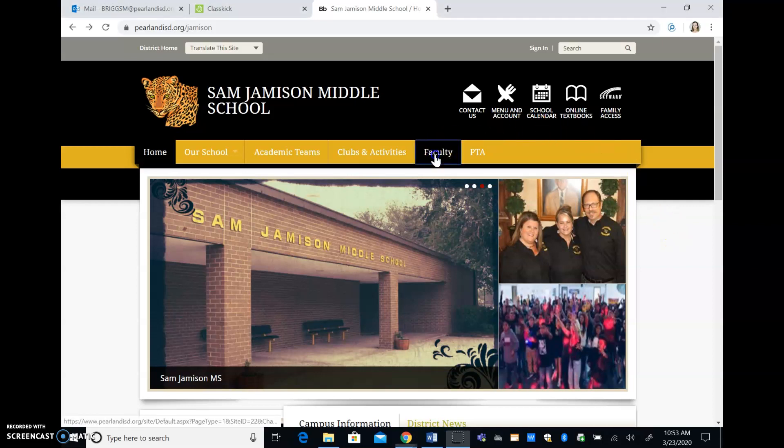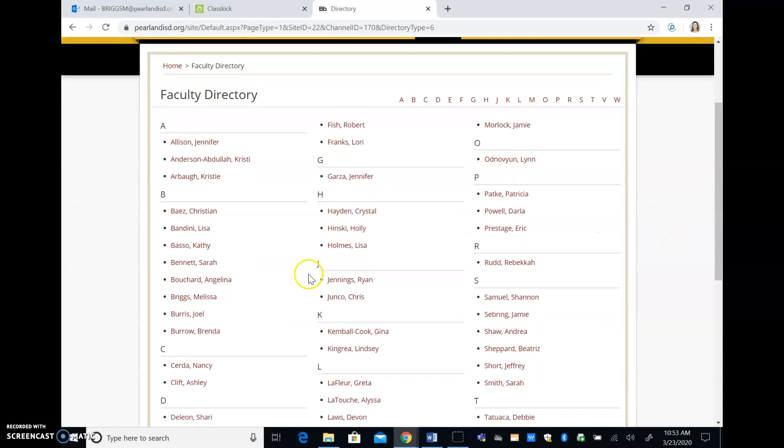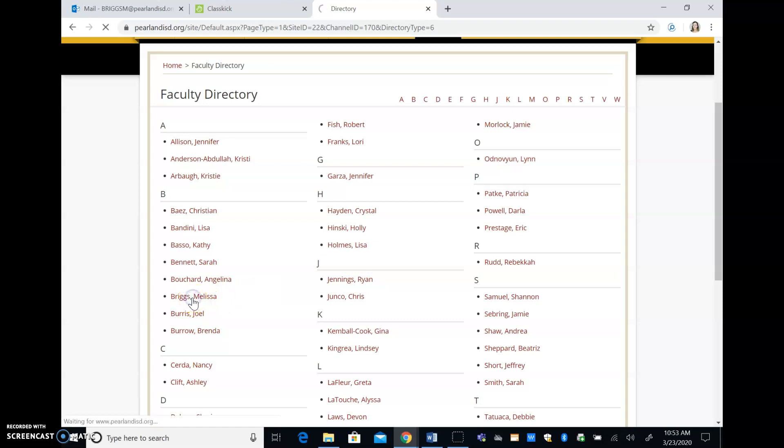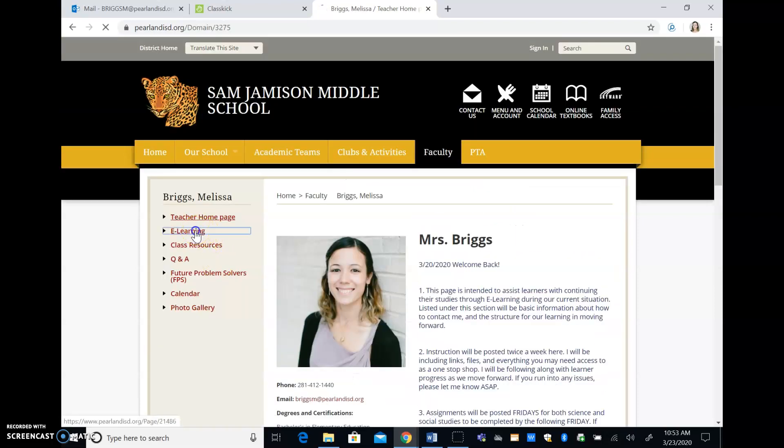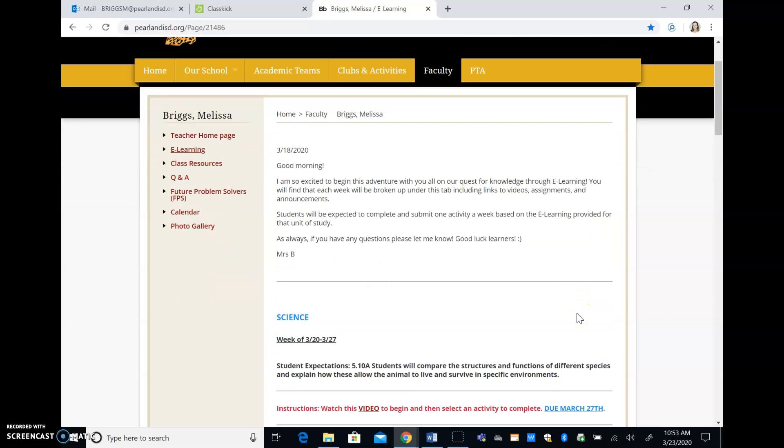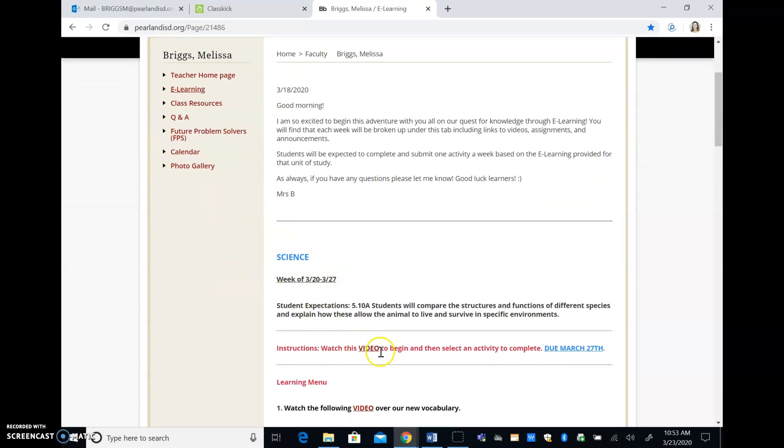So first you're on the Jamison School page. You'll go to faculty, find my name, and then you're in our e-learning tab. You'll have the starting video right here where you'd watch, and then you're going to select an activity to complete.